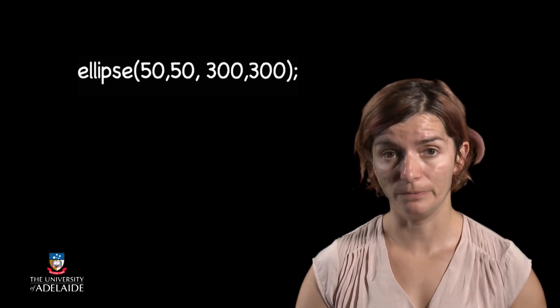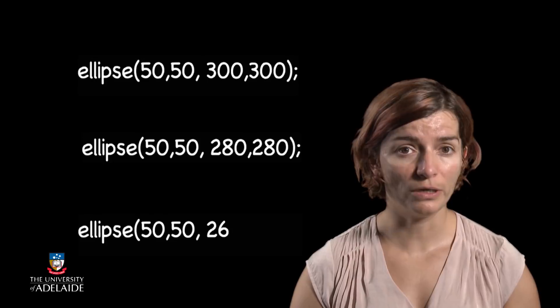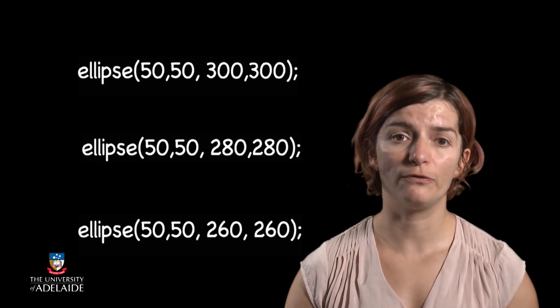The circle center will be at 50 and 50. Again, try to sort things out first by using pen and paper, by drawing the first circle, then the second circle, then the third, and so on, until you figure out the structure of the for loop.